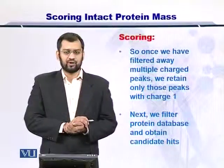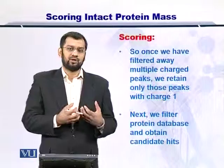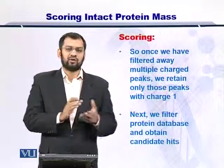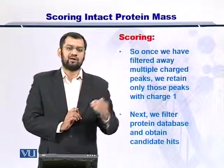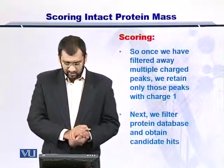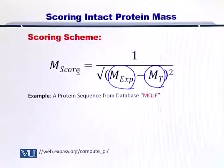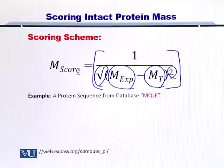Now towards scoring. You want to rank the protein from the database which is closer in mass to your sample higher, so that you can have a list of proteins that are more matching to your sample. We have to look at a mathematical formulation to arrive at the scores. In this score, you have the mass from the experiment and the mass from the database. You subtract them, take the square and then the square root to get the absolute difference, and then take the reciprocal of this difference. The proteins that are closer in mass to the sample will have a bigger score.